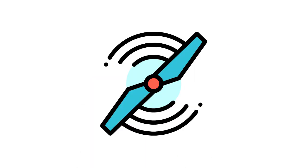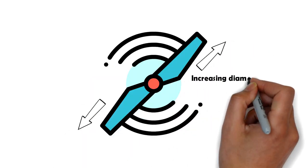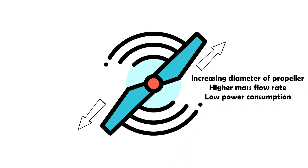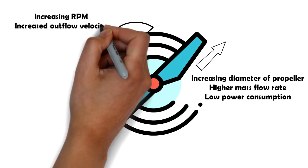It should be noted that when we are looking to have a higher mass flow rate, we will increase the fan or propeller diameter. On the other hand, when we are looking to increase the outflow velocity, we will increase the fan RPM.